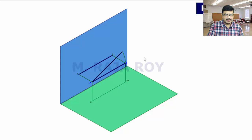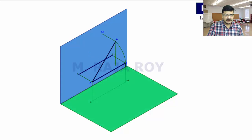Now the line is making some angle with respect to the horizontal plane — assume this angle is theta. This is the position of B after getting the inclination with respect to HP. But this is parallel to VP, so you get the true length in the front view and reduced length in the top view. The reduced length AB2 is in the top view, and A'B2' is the true length in the front view. So this angle is theta, and the line is making inclination with respect to HP only while being parallel to VP.